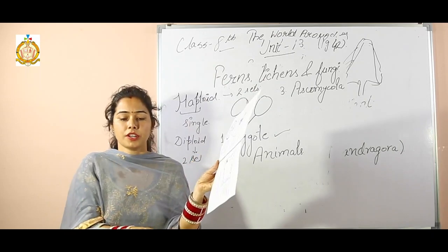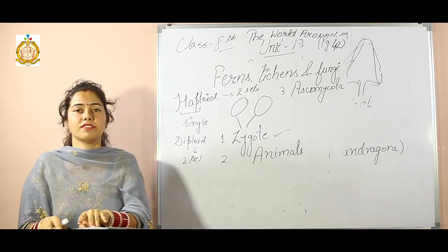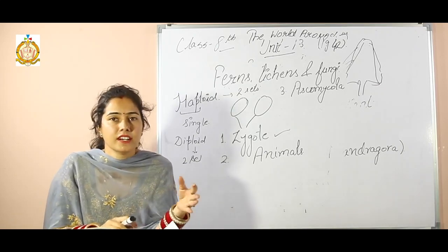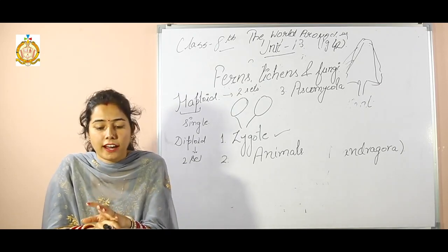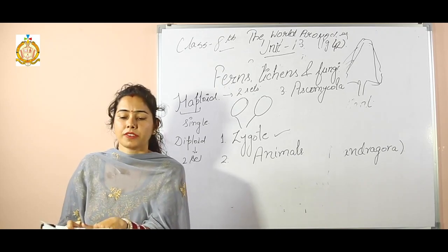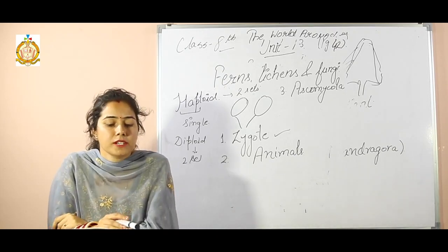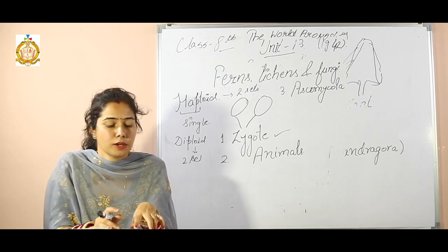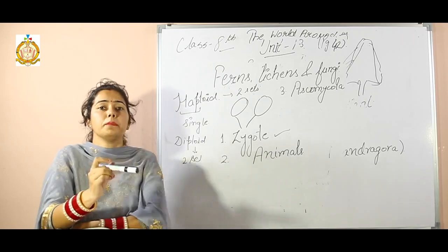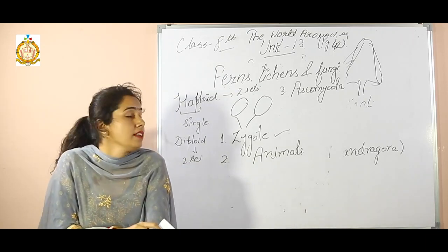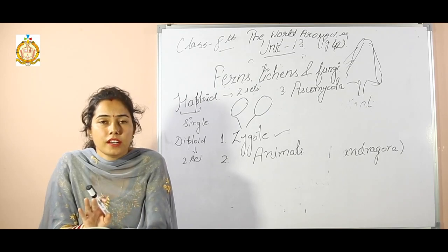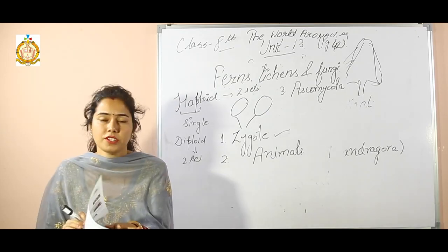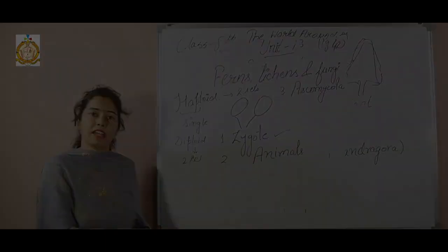This is all about your unit, the world around us. We completed three chapters: special trees, ferns, lichens and fungi, and unique birds. There is a quiz of animals and plants that is your homework. Write the questions in your book and also attempt the internal questions in these chapters. Write the internal questions in the notebook. Thank you.